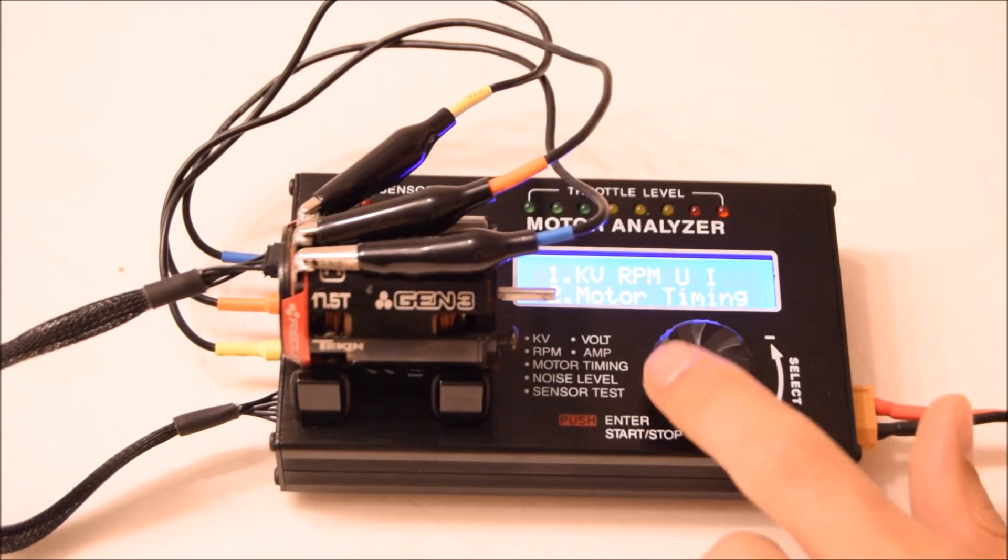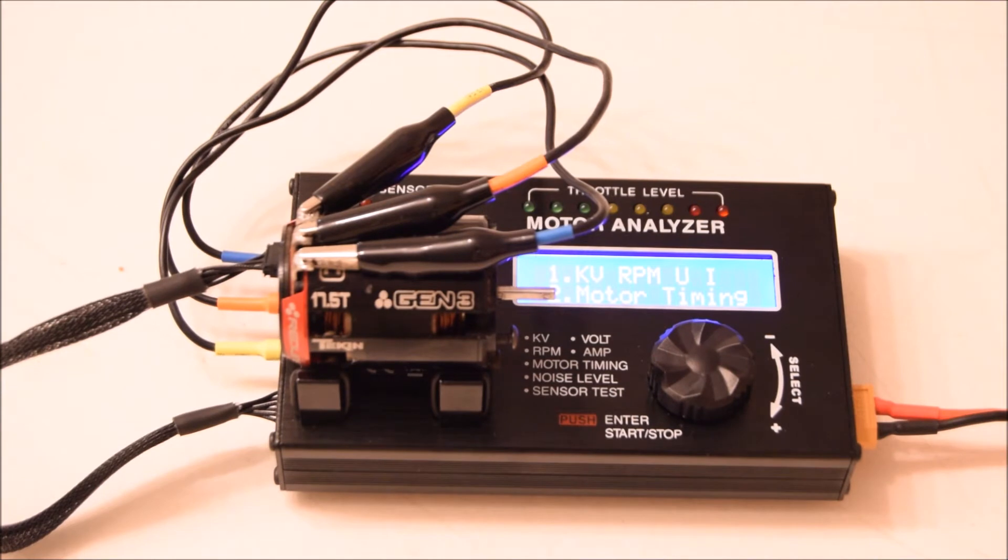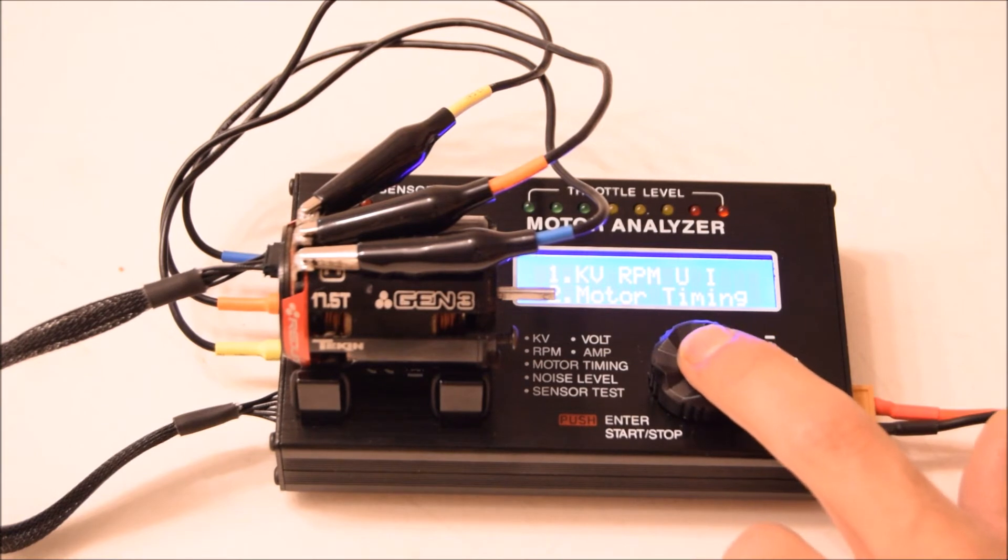Moving on to the motor timing—this is the end bell adjustment timing. This is what you adjust to change the power of the motor, basically, how many amps it pulls. I'm just going to perform this test and show you.